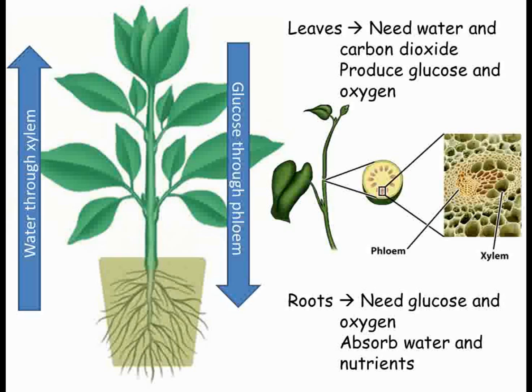Inside a stem, there's a series of pipe-like cells called phloem and xylem. Xylem carry the water from the roots upwards, whilst the phloem move the glucose from the leaves to the rest of the plant.